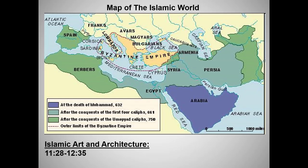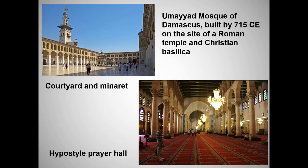Islam spread with extraordinary speed. By the time of his death in 632, Muhammad's armies had conquered Arabia. The areas in light blue were conquered under the first four caliphs, and the Umayyad caliphs from their new capital in Damascus went on to conquer the areas in green in less than 100 years. The Mosque of Damascus is not a required work, but it is the first major mosque and it would set the pattern for most early mosques.